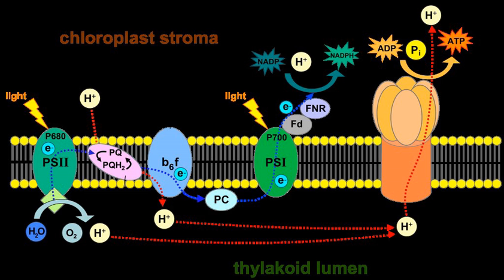The structure and function of cytochrome B6F in chloroplasts is very similar to cytochrome BC1 (complex III) in mitochondria. Both are transmembrane structures that remove electrons from a mobile, lipid-soluble electron carrier and transfer them to a mobile, water-soluble electron carrier — plastocyanin in chloroplasts, cytochrome C in mitochondria. Both are proton pumps that produce a transmembrane proton gradient. Cytochrome B6 and subunit IV are homologous to mitochondrial cytochrome B, and the Rieske iron-sulfur proteins of the two complexes are homologous. However, cytochrome F and cytochrome C1 are not homologous.